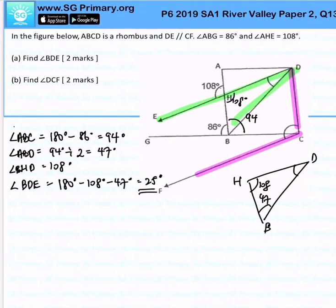Angle BDC, we know that it is 47 degrees. Angle DBC is also 47 degrees. So if this is 47, this is 47.